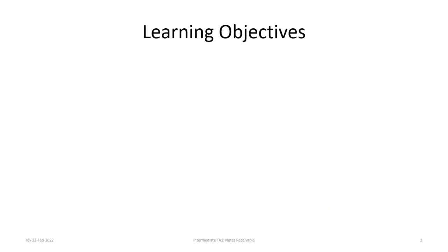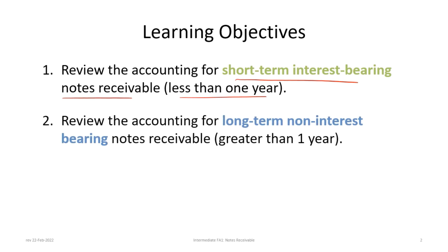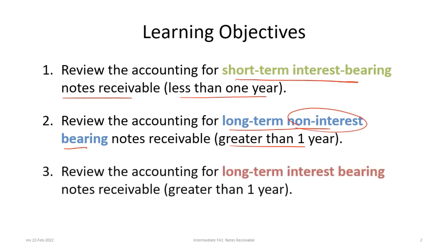We have three learning objectives for this tutorial. First, to review the accounting for short-term interest-bearing notes, basically those that are less than one year. Second, to review accounting for long-term non-interest-bearing notes — greater than one year but non-interest-bearing. And third, to review accounting for long-term interest-bearing notes, so greater than one year and bearing interest.